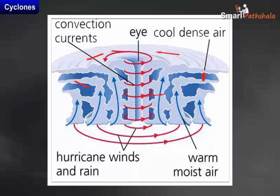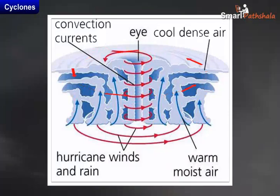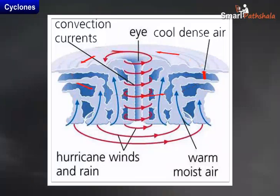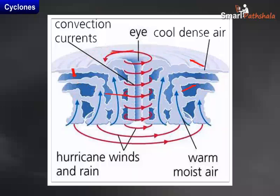Around the eye, there is a cloud region. In this region, there are high speed winds and thick clouds with heavy rain. Away from this region, the wind speed gradually decreases.